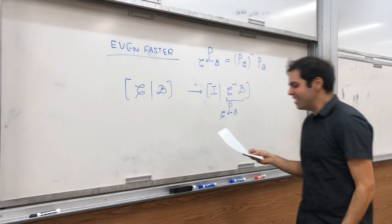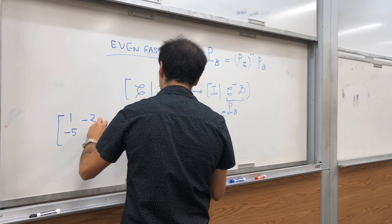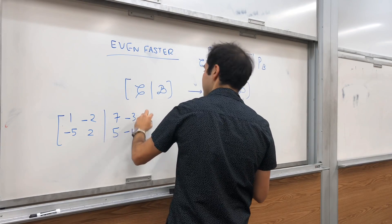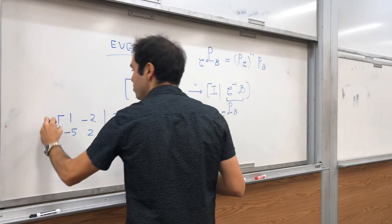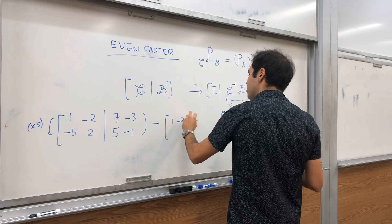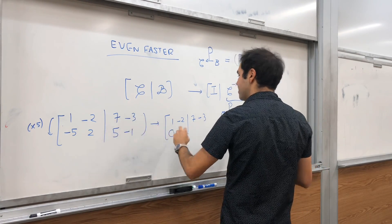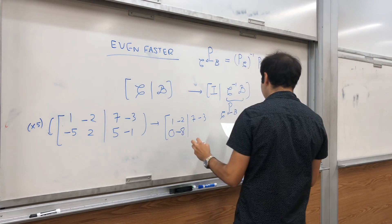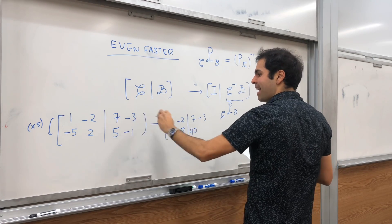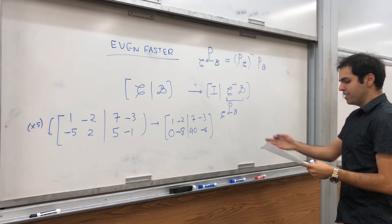So, now, let's just do that. Let's take your basis C, which is 1 minus 5, minus 2, 2. And, your basis B, which is 7, 5, minus 3, minus 1. And, row reduce. So, you multiply this first row by 5. And, you get 1 minus 2, 7 minus 3. And, then, 0. And, then, minus 10 plus 5. So, minus 8. And, then, okay, 35 plus 5, which is 40. And, minus 15 minus 1, which is minus 16.